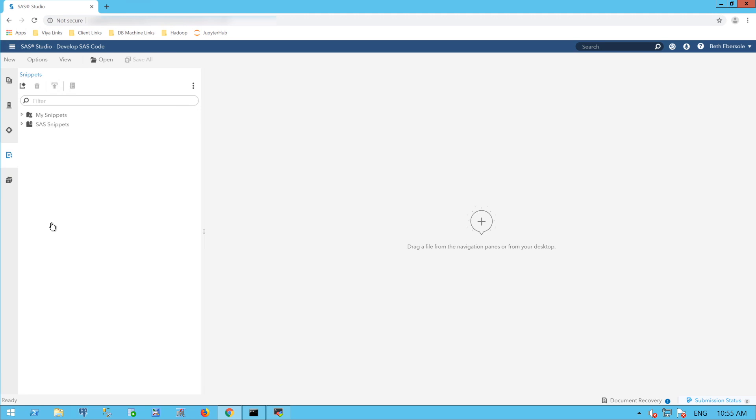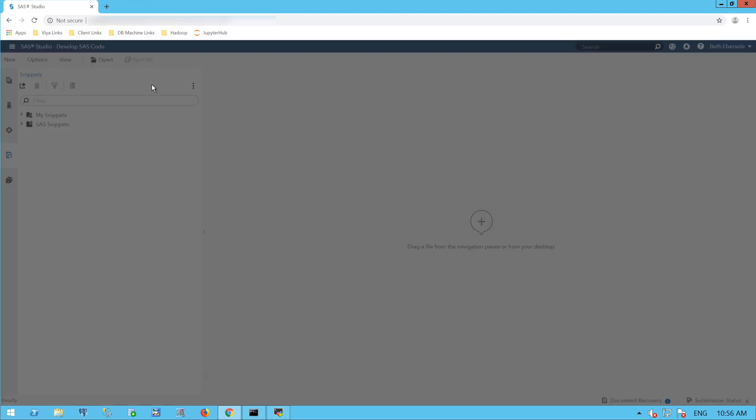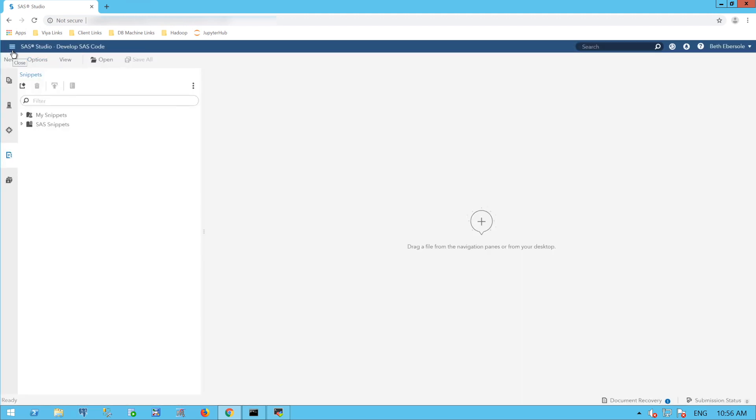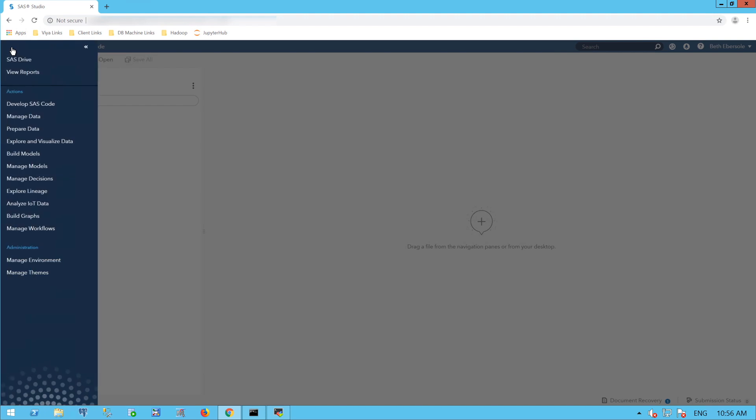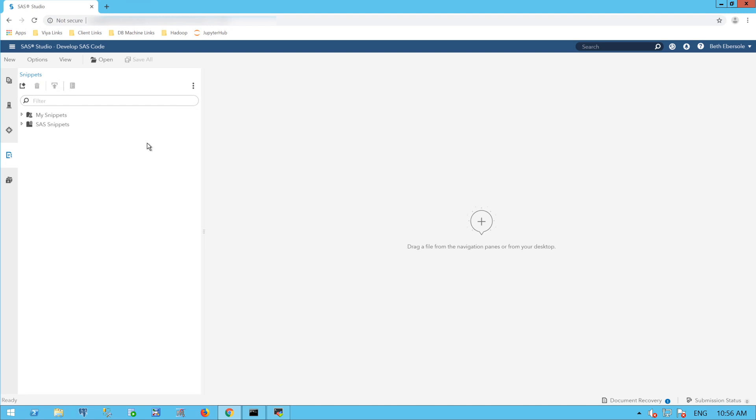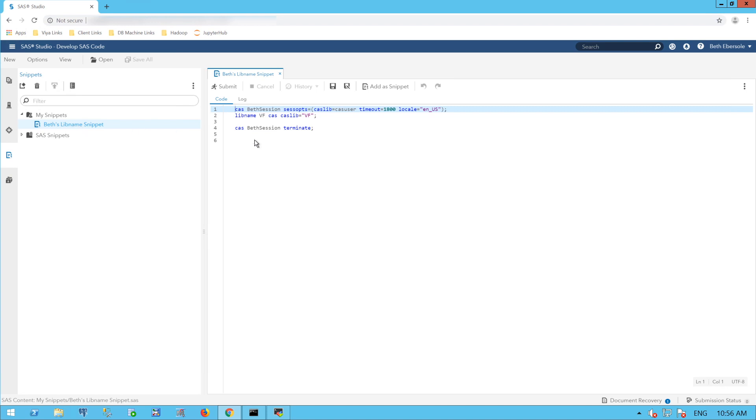Here I am in the SAS Studio 5 interface. You can see there are three horizontal lines here. When I click on that, I get the side menu. I selected Develop SAS Code, and that brought me to SAS Studio 5. I've pre-created a snippet so that I can get my data where I can see them.